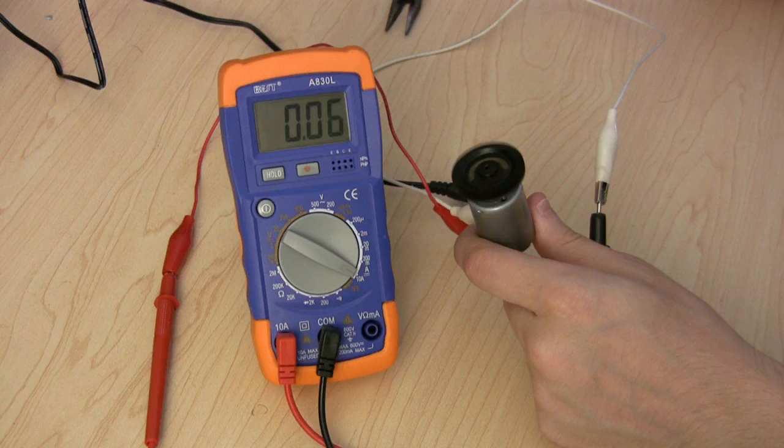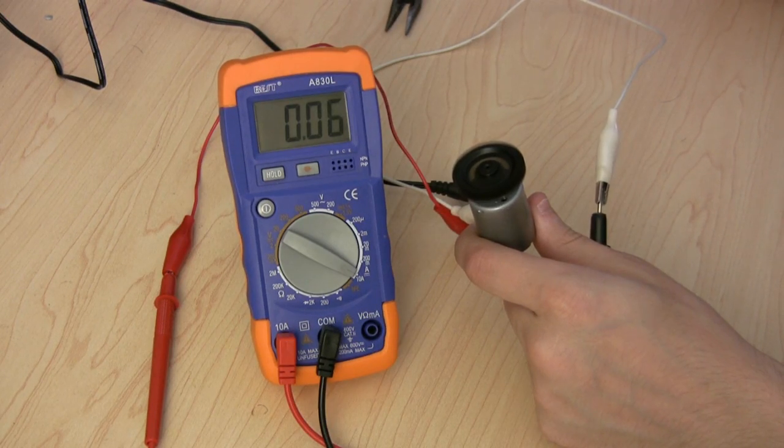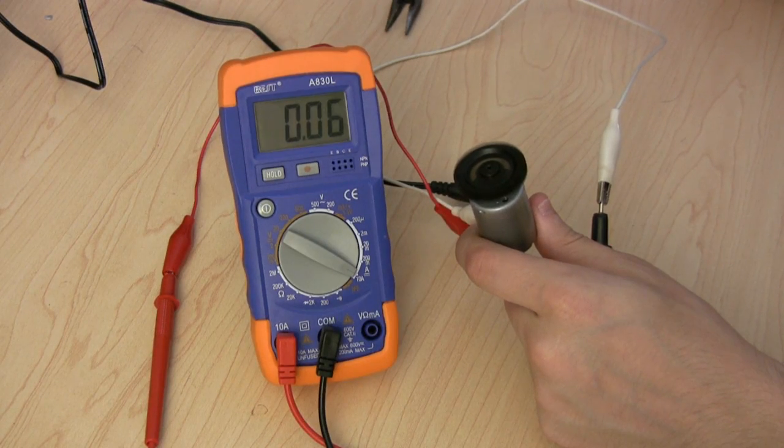That's because of the back EMF we talked about earlier, which means that as the motor spins faster, there's actually a voltage drop due to the electromagnetic and mechanical work being done. So there's less current drawn from the power supply.